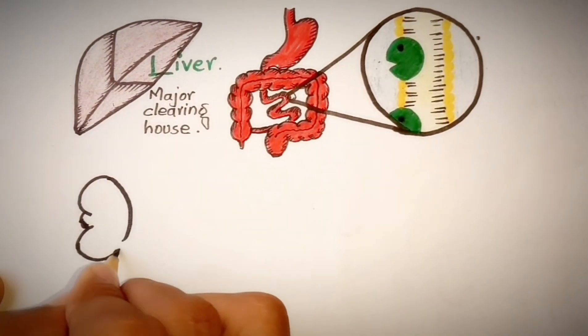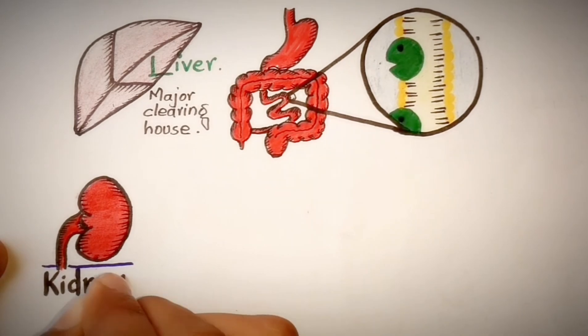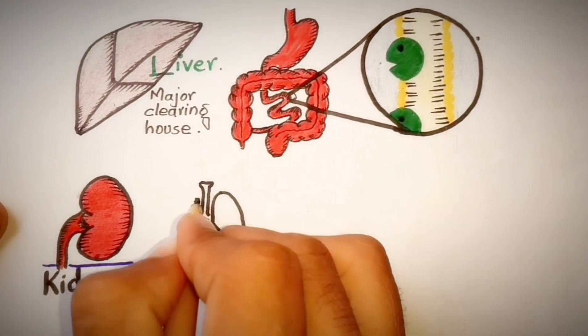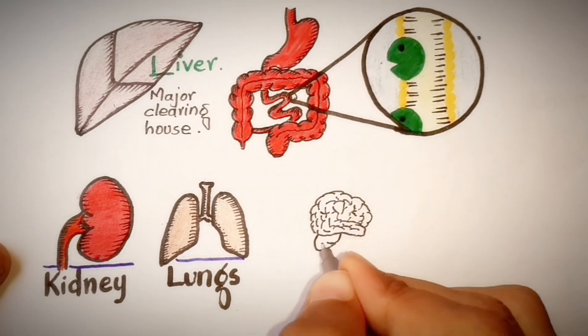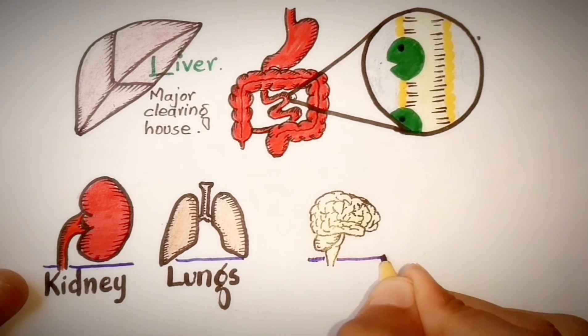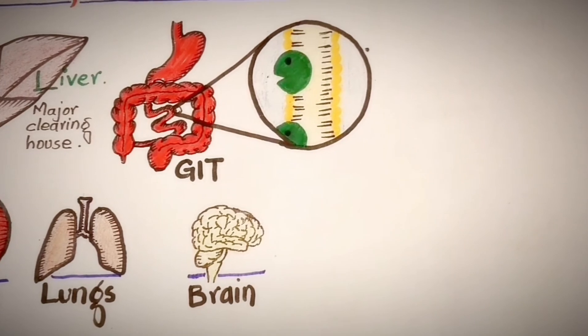Other organs like kidneys, lungs, and brain also metabolize significant concentrations of some drugs.